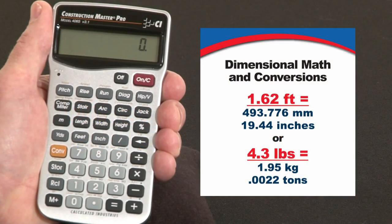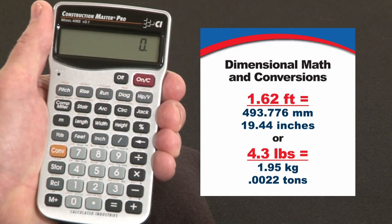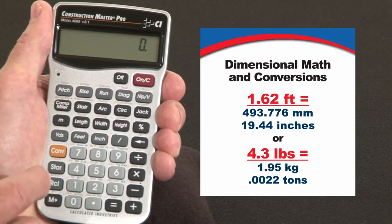Now let me show you how to do dimensional math and conversions on your Construction Master Pro. Keep in mind, the keystrokes are exactly the same if you're using our Trig model or our desktop models. Both give you fast, accurate solutions for all your dimensional math and conversion needs.